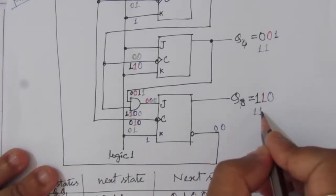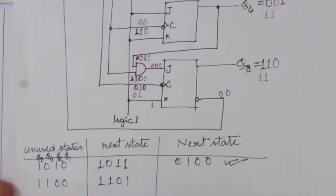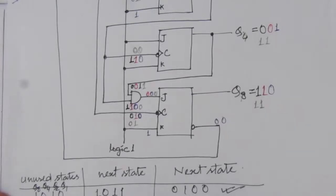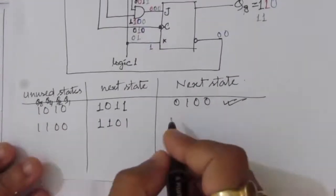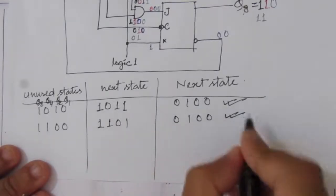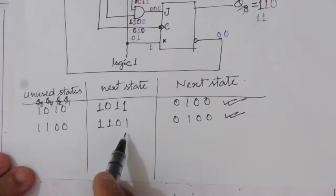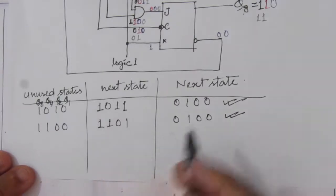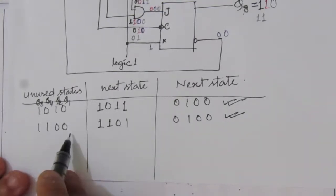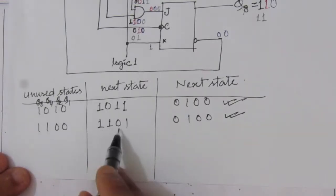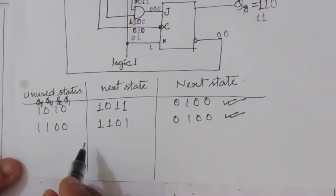Following the analysis, the next state from 1100 is 1101, which is decimal 13 (8+4+1). Continuing with 1101 as the present state and applying the same procedure — which I have previously calculated — the next state is 0100 (decimal 4), a used state. So state 12 (1100) → 13 (1101) → 4 (0100).